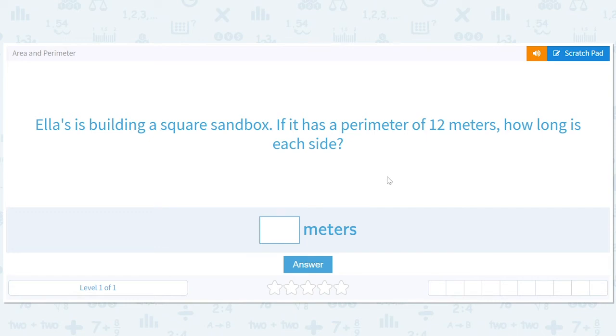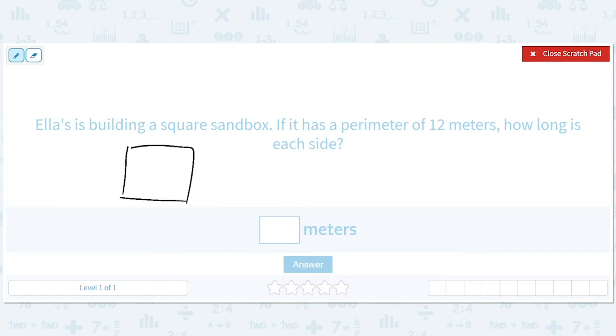I think you're going to enjoy these area and perimeter questions. I always like these types of questions where you can draw a little picture and solve it. So we're building a square sandbox, or Ella is. Hopefully she lets us join her. And it has a perimeter of 12 meters. How long is each side?